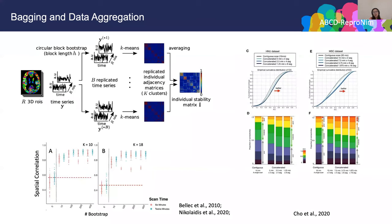Going back to the algorithm: is there any way to make results more reliable without collecting more data? One strategy is bagging by bootstrapping the individual data and the group-level clustering. Even 10 rounds of bagging can increase the stability of results more than collecting double the amount of data. Another strategy is to concatenate data. When concatenating shorter sessions together, reliability is better than a single session with equal total length. In ABCD studies, shorter sessions are designed to control head motion, so we can use data concatenation and bagging together to increase clustering reliability.